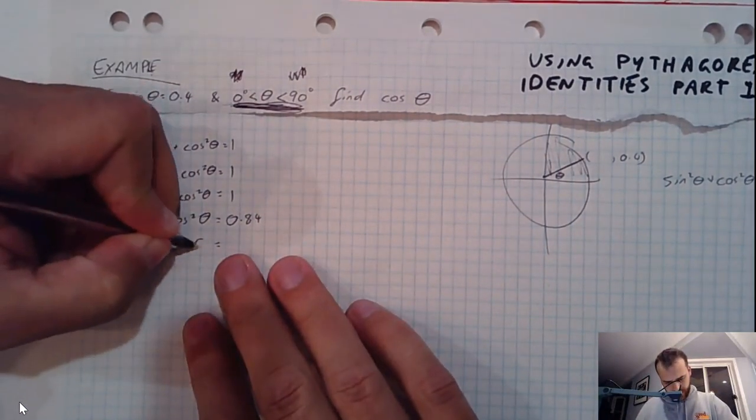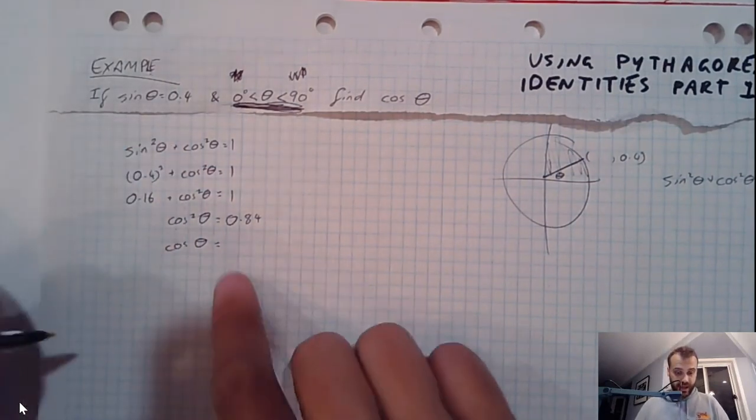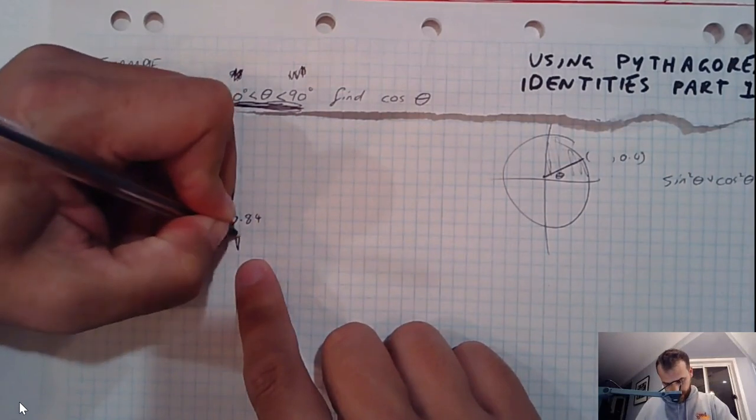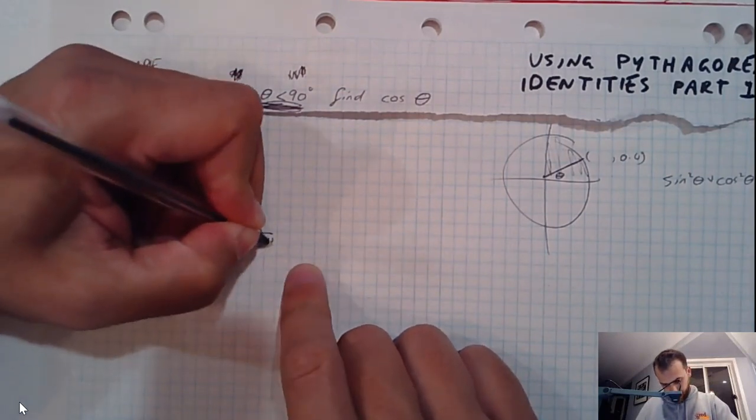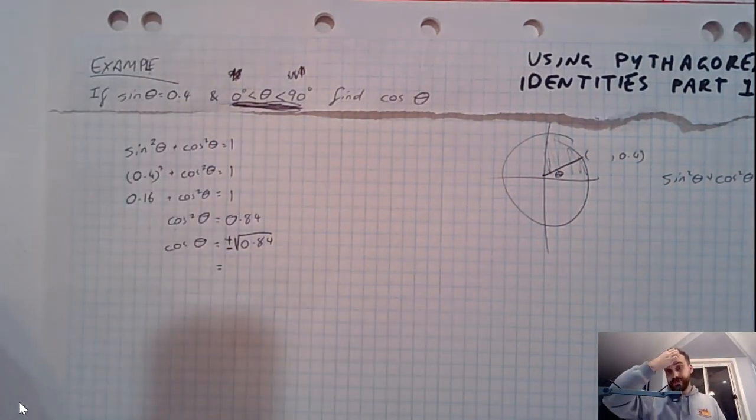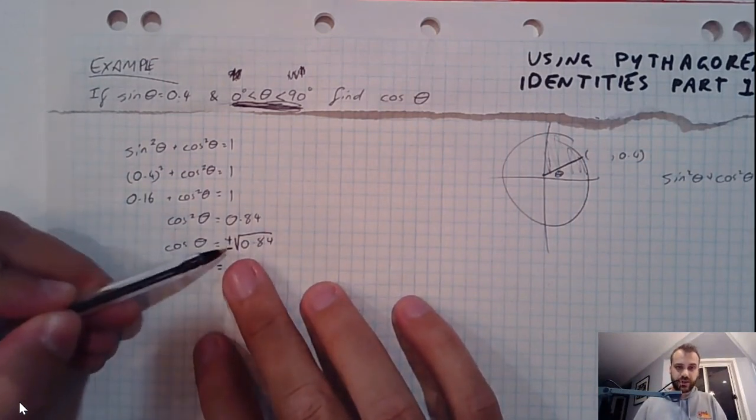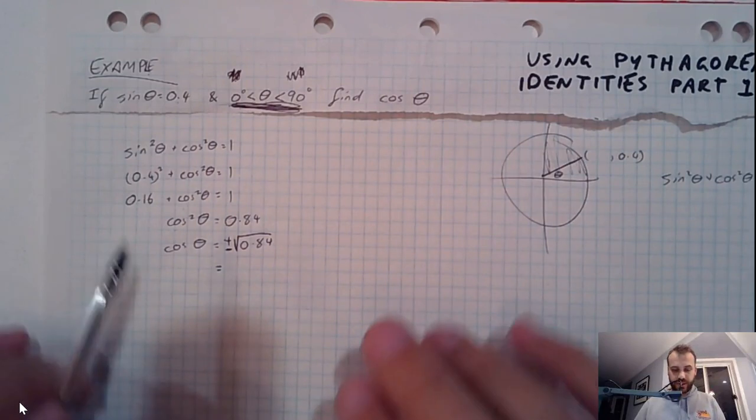So that'll be cos theta, the square root of cos squared theta is cos theta, and the square root of 0.84, and I'm going to say plus or minus. Now, this is where you need to stop and think, because we've got a square root, and square roots always have plus or minuses on them, but look at this question.